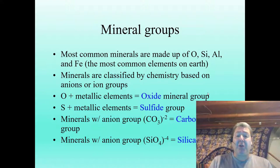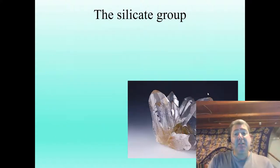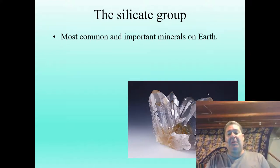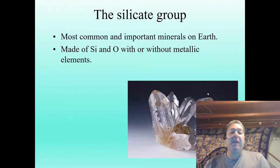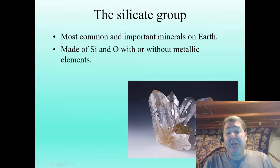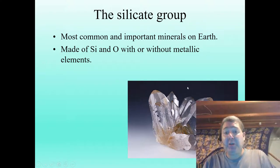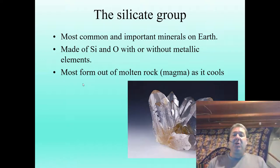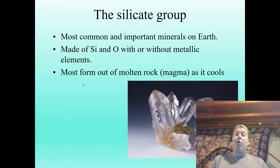The silicate group is what we'll focus on in this video. It is by far the most common and most important group of minerals on our planet — very common rock-forming minerals made of silicon and oxygen, with or without metallic elements. Quartz, for example, is just pure silicon and oxygen.